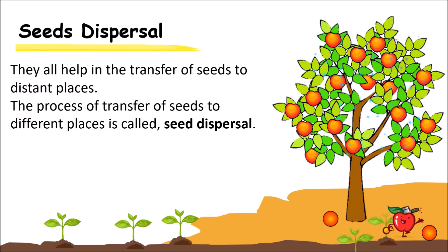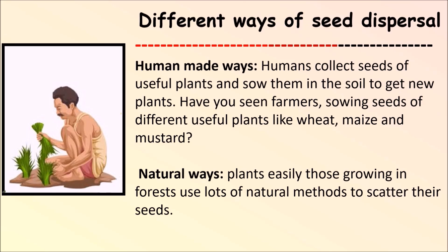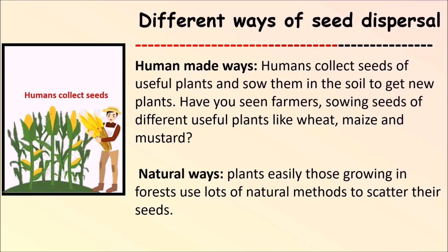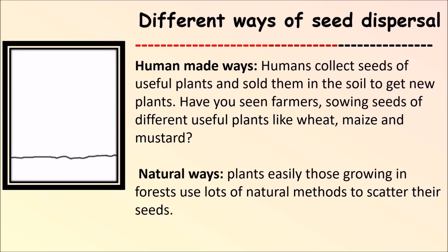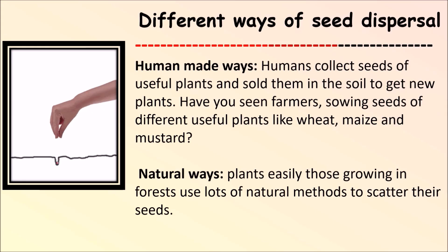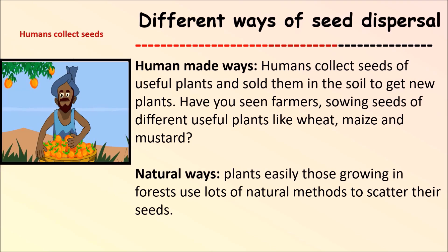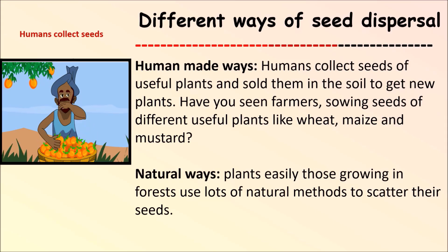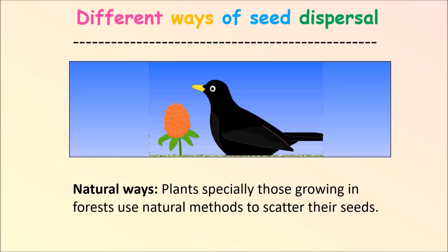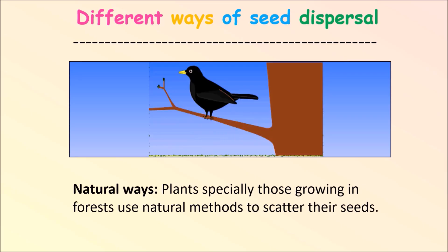Ways of seed dispersal can be human-made or natural. Humans select seeds of useful plants and sow them in the soil to get new plants. Have you seen farmers sowing seeds of useful plants like wheat, maize and mustard? Write to me about it in the comments. In the meanwhile, I will share with you the natural ways of seed dispersal. Plants, specially those growing in forests, use these natural methods to scatter their seeds.